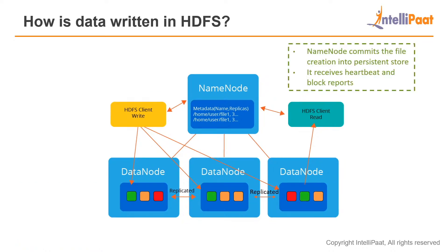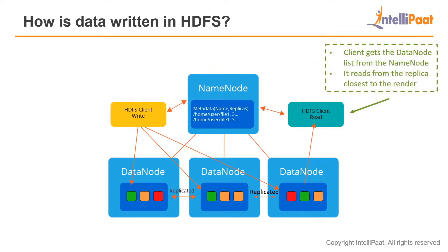The name node commits the file creation into a persistent store and receives heartbeat and block reports. The name node is constantly checking which data nodes are healthy and which are not. If one is unhealthy, it will not try to access files from there — if somebody tries to read it, it will access the file from some other data node and will not use that unhealthy data node for file storage either. The client gets the data node list and reads from the replica closest to it, to minimize any delay in reading the file.